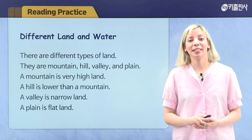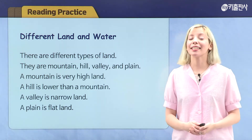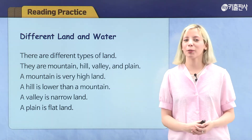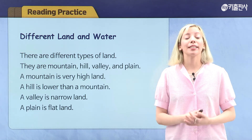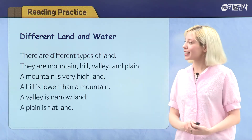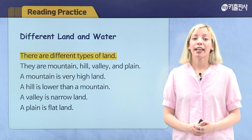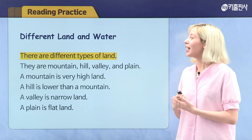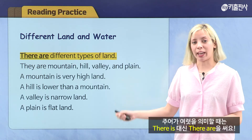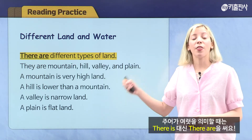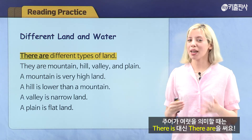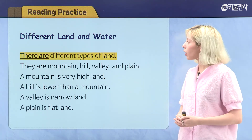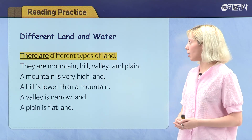So now let's practice reading. Our title is different land and water. But before we read, let's go over our sentence patterns. Can you find the sentence pattern here? That's right. Here they use there are. You use there are when describing many things instead of there is. There are different types of land.